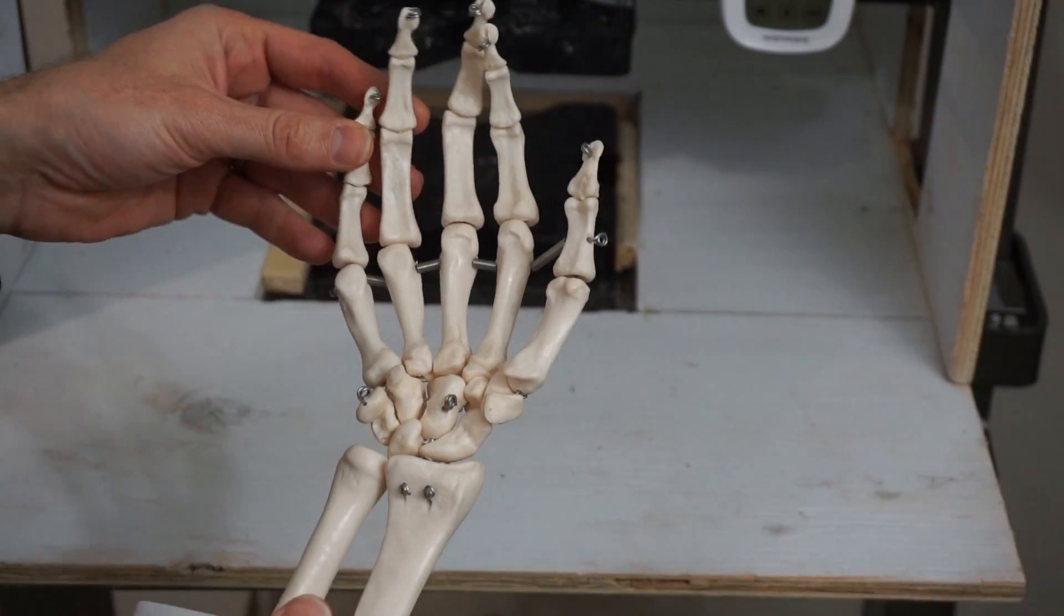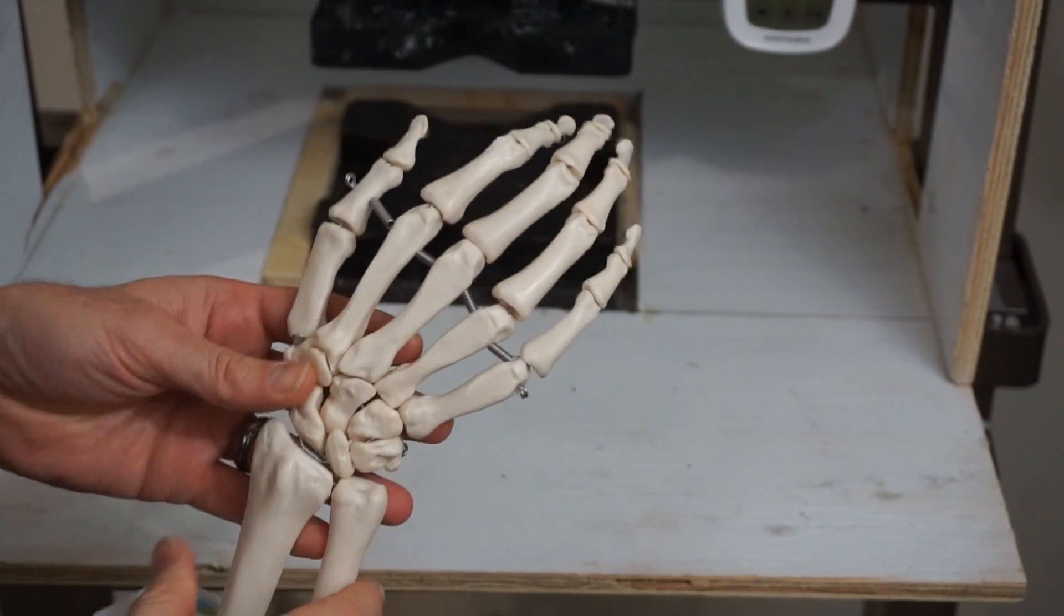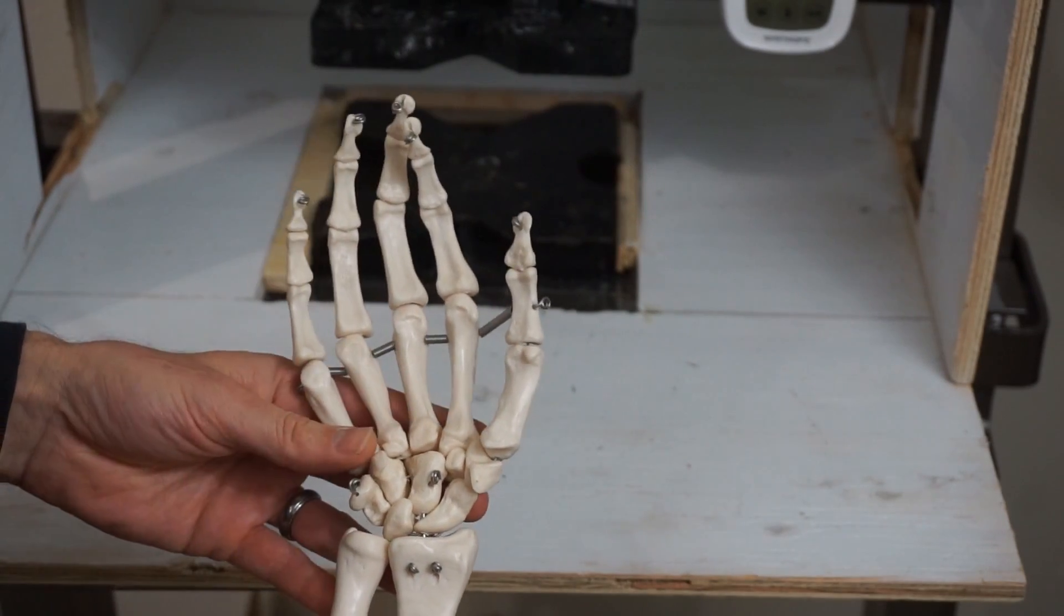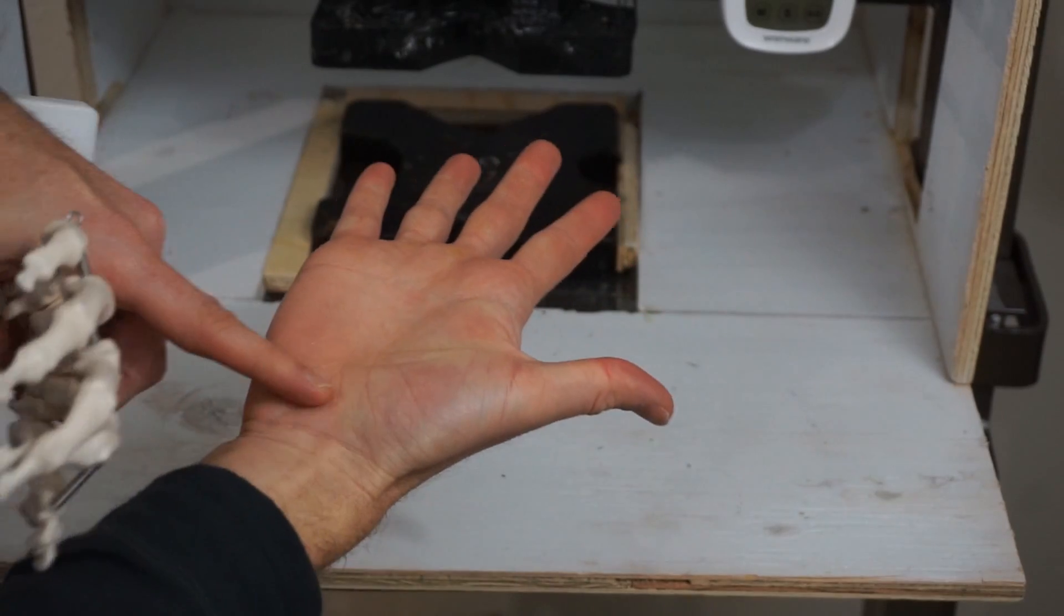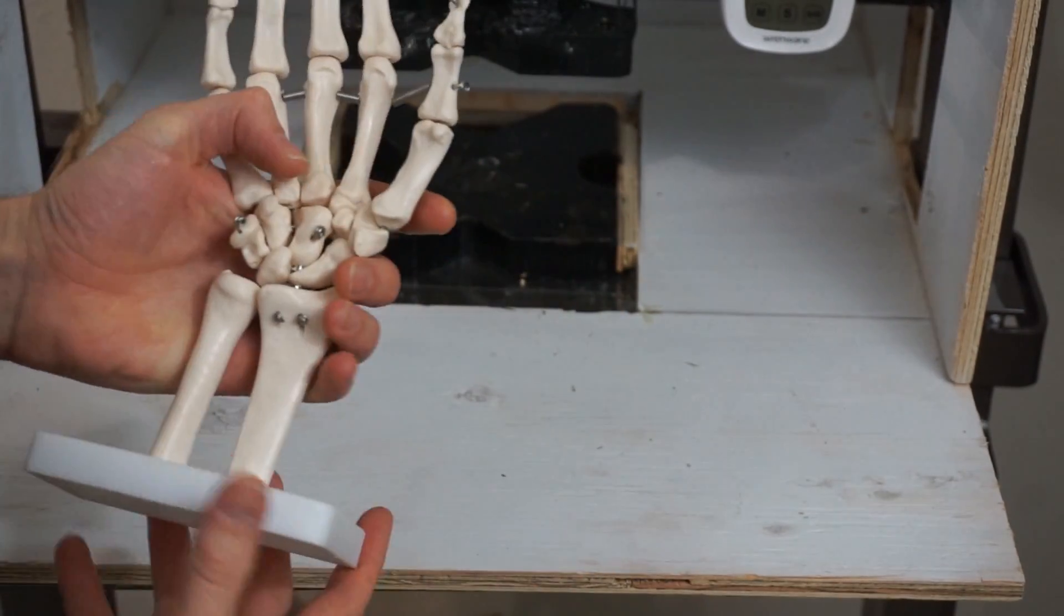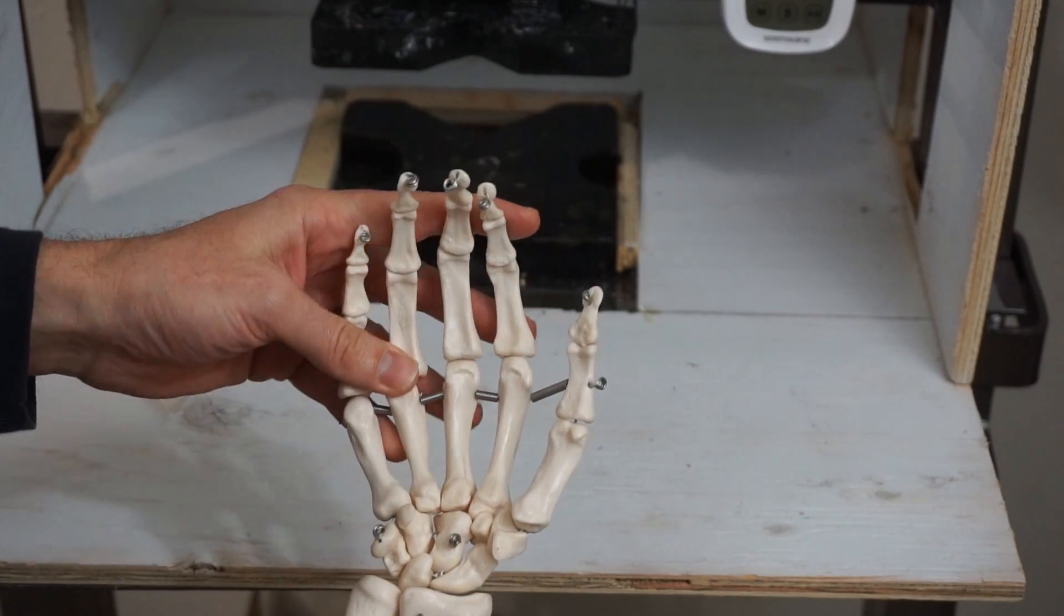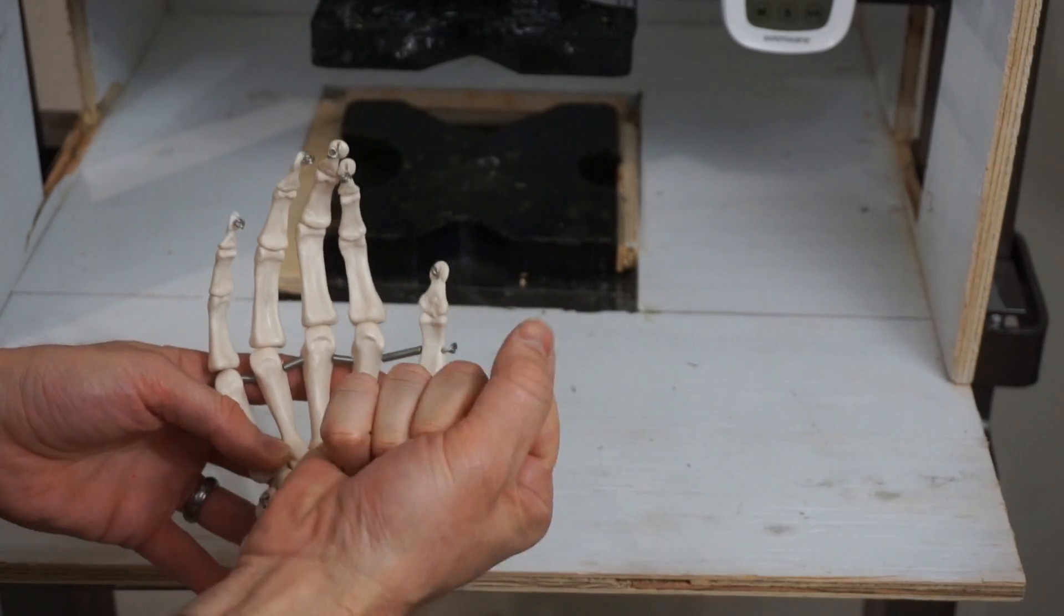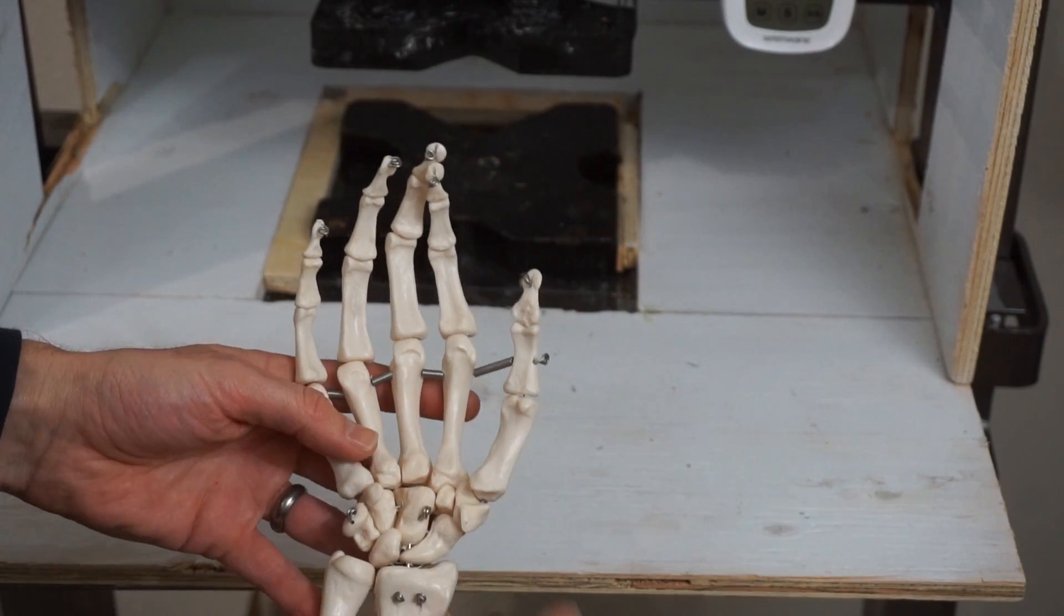Okay, so the bones in my hand are from an anatomically correct model that I bought. So in the hand there are 27 bones, a lot of them are right in the center here in the wrist area, these are the carpal bones. So this amount of bones gives the hand 27 degrees of freedom, so you can see how many different ways the hand can move is due to all these different bones.